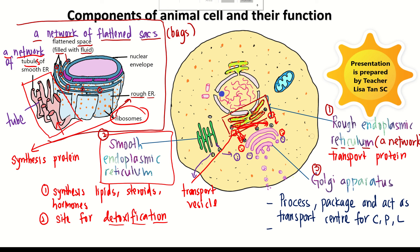Next, the Golgi apparatus. What is the structure and function of the Golgi apparatus? For the structure, Golgi apparatus is made of flattened sacs. But unlike rough ER, these flattened sacs are not interconnected — they are separate. The function of Golgi apparatus is to process, package, and act as a transport center for CPL: C for carbohydrate, P for protein, and L for lipid.